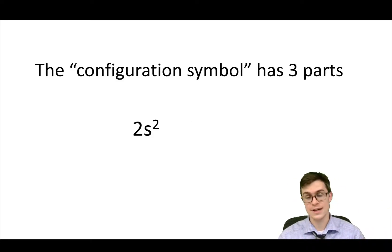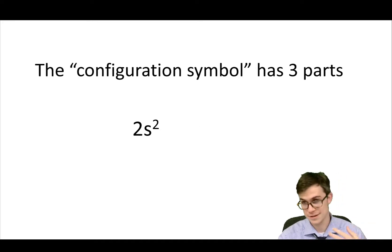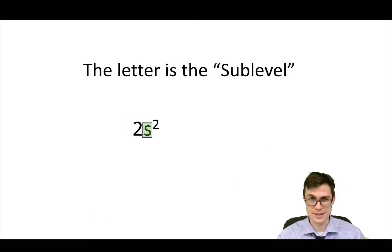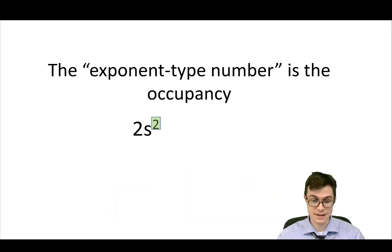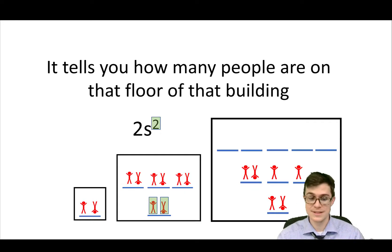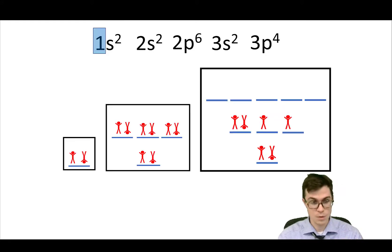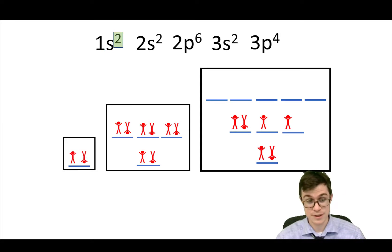Every single part of the symbol has three sections. The big number is the energy level — it's like the building. The letter is the sub-level, and that's like the floor in the building. The exponent-type number is the occupancy that tells you how many people are in that floor. So for sulfur: the '1' means I'm in the first energy level, 'S' means I'm on the S floor, and '2' means there are two electrons in that floor.